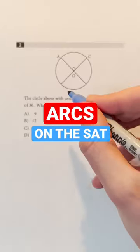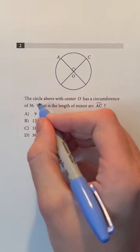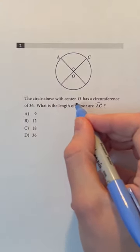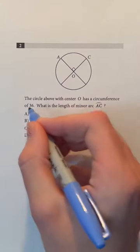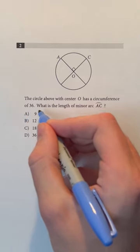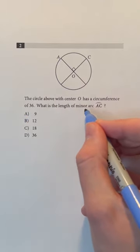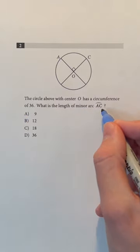Arcs on the SAT. The circle above with center O has a circumference of 36. What is the length of minor arc AC?